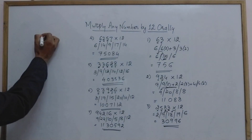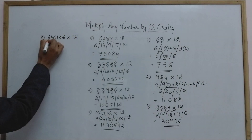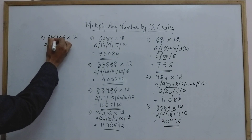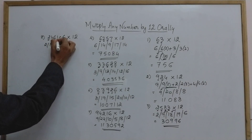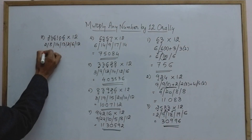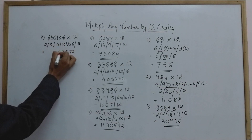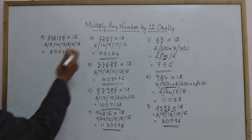Eighth example: 246106 × 12. Starting with 2: double of 2 plus 4 = 8; double of 4 plus 6 = 14; double of 6 plus 1 = 13; double of 1 plus 0 = 2; double of 0 plus 6 = 6; double of 6 = 12. Writing the answer: 2, 7, then 2, then 5 with carry from 13, then 9 with carry, and final digits — you can check the full answer using a calculator.